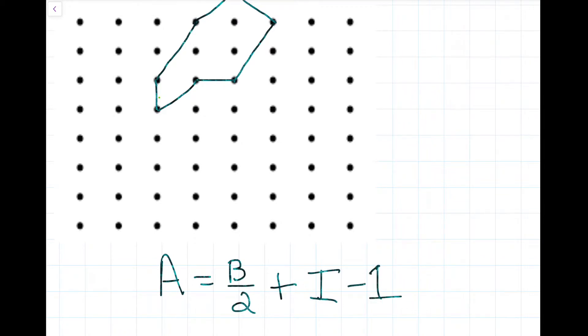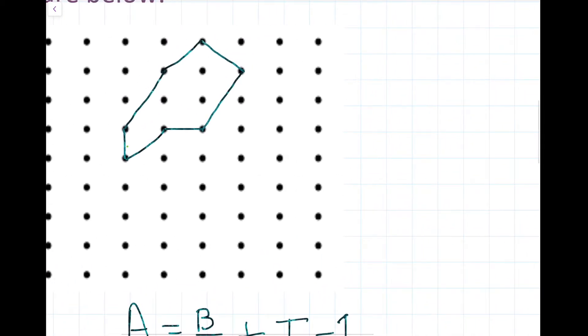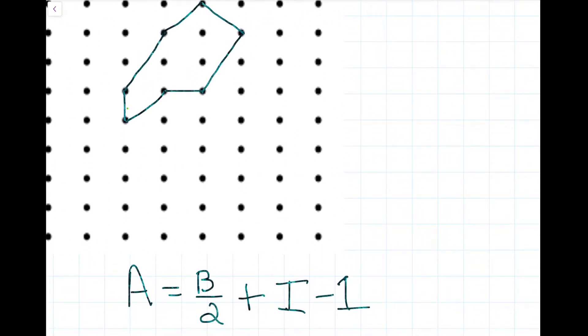So, this is the theorem. So, let's try to apply it to this polygon. The number of boundary points is 1, 2, 3, 4, 5, 6, 7. So, we have 7 boundary points, so area equals 7 over 2, plus interior points minus 1.